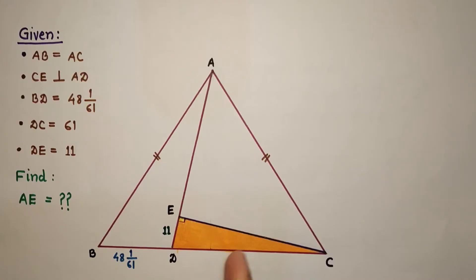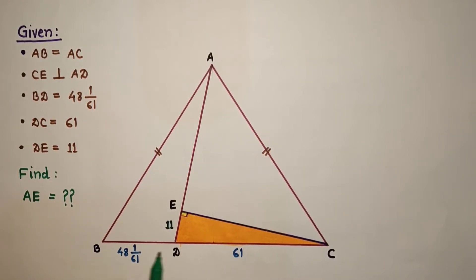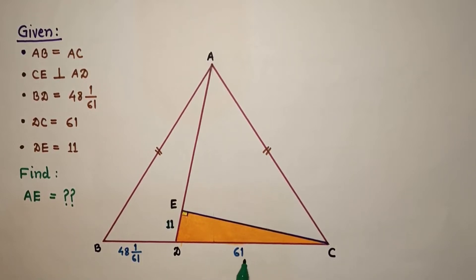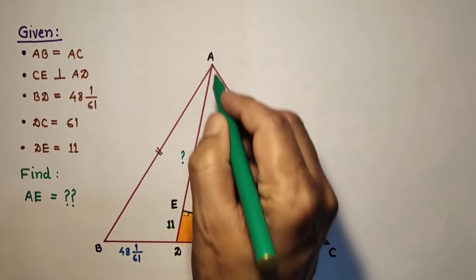In this question we are given an isosceles triangle with AB equal to AC. BD length is given as 48 and 1/61 (a mixed fraction) and DC length is 61. ED is 11 units, and AD is perpendicular to CE — CE is perpendicular to AD. We have to find the length of AE.